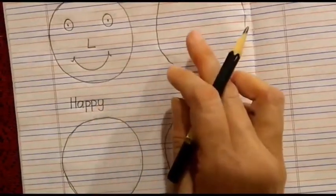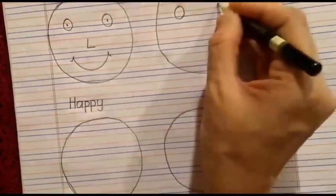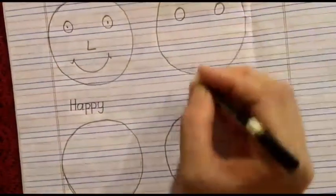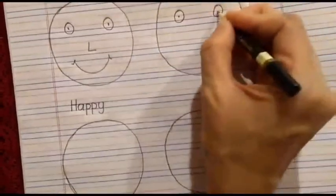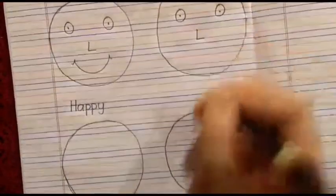Then, we will draw another feeling. Okay. Now, again, small two circles, then one dot inside, one dot inside, one L, which is nose.